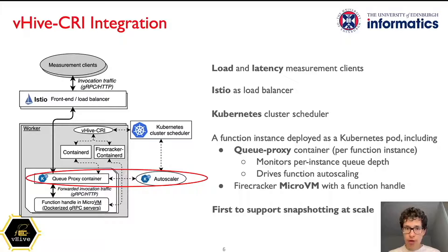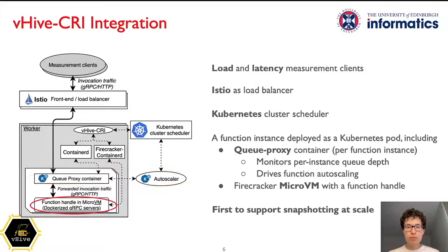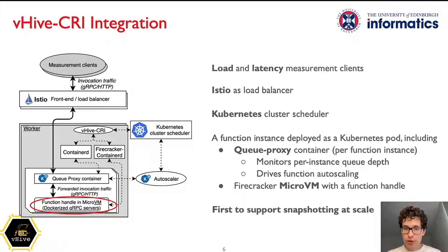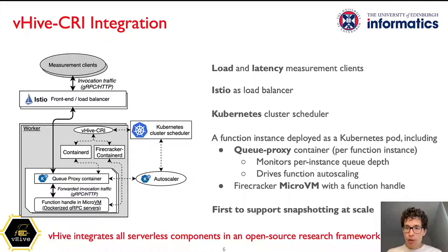On the worker, the invocation first comes to a QProxy container deployed for each function. This container monitors the depth of the requests queue in front of each function instance. The QProxy then reports this information to the Knative Autoscaler service that makes scaling decisions. After that, QProxy forwards the requests to a function instance that runs inside the micro VM. The functions are deployed as gRPC servers with user-provided handles that perform the actual work. Finally, to bring VHive to the cutting edge of today's serverless systems, we added snapshot support to Firecracker Containerd. Integrating production-grade components together makes VHive a framework of choice for serverless researchers, allowing innovation across the whole stack.